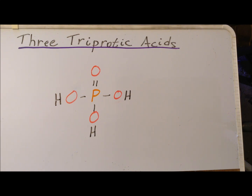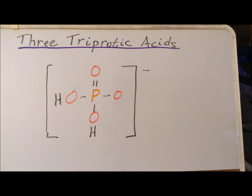The first of our triprotic acids is phosphoric acid, H3PO4, which has this structure in its fully protonated state. After it loses its first acidic hydrogen, we have its conjugate base, the dihydrogen phosphate ion, which has a minus one charge.